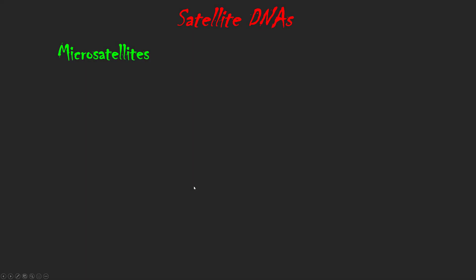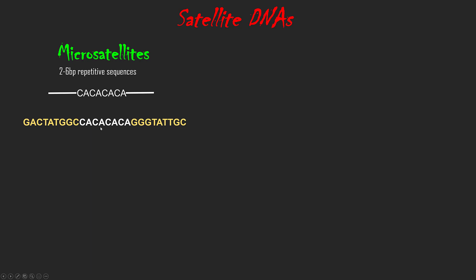Let's first understand microsatellite. It is a 2 to 4 base pair repetitive sequence present in the genome. For example, CA is a 2 base pair sequence that repeats 4 times in one individual, while in another individual this sequence may repeat 12 times. Microsatellite is divided into 2 categories. If the repeat sequence is flanked by 2 constant sequences, then it is known as simple sequence repeat (SSR). Here the yellow highlighted flanking sequences are the same in all individuals; the only difference is the number of repeats in the middle.